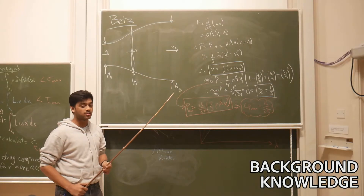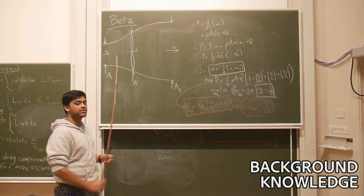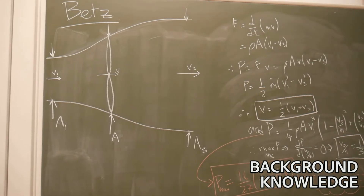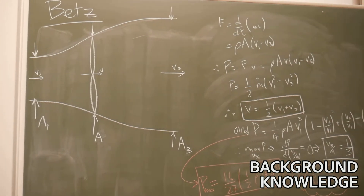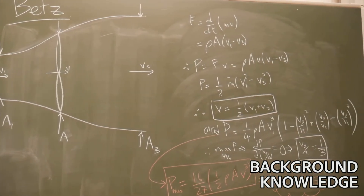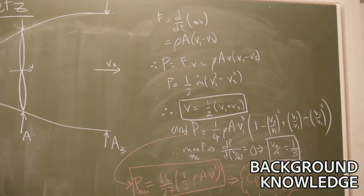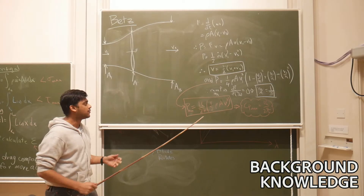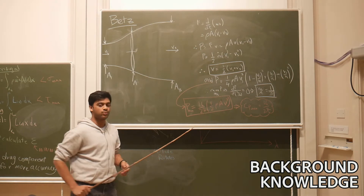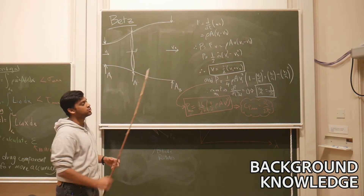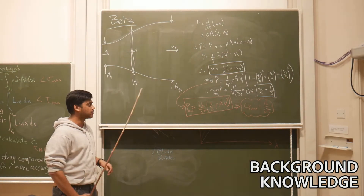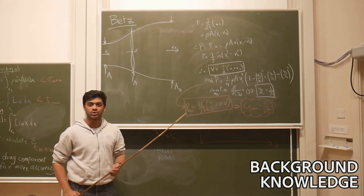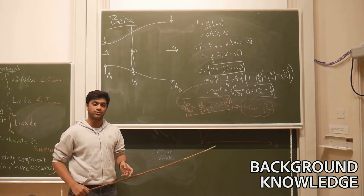The maximum power that the wind turbine can extract can be calculated using the Betz formulation. Betz derived an equation assuming the flow was coming into the wind turbine and then leaving, and he calculated the velocity at the wind turbine should be about the average of the velocity upstream and downstream. If you maximize the power it gives us a ratio of one third, meaning the velocity downstream should be about a third of the velocity upstream. The power coefficient then comes out to be 16 over 27, which is approximately 0.59.